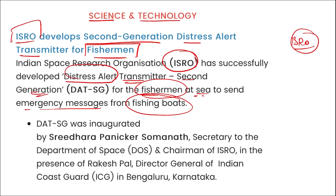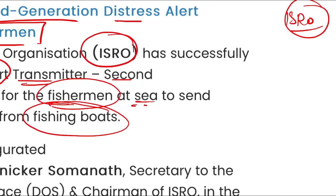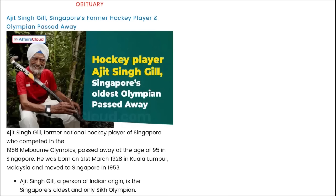In obituary news: Ajit Singh Gill, Singapore's former hockey player and Olympian, recently passed away. Ajit Singh Gill, former national hockey player of Singapore who competed in the 1956 Melbourne Olympics, passed away at the age of 96 in Singapore.